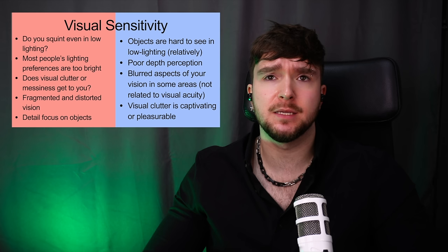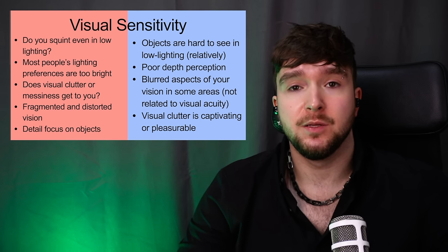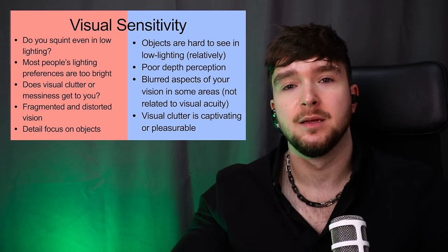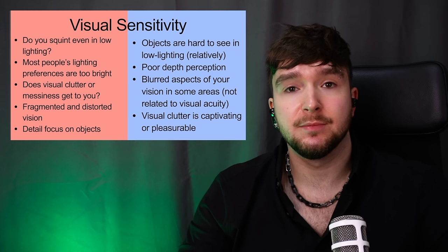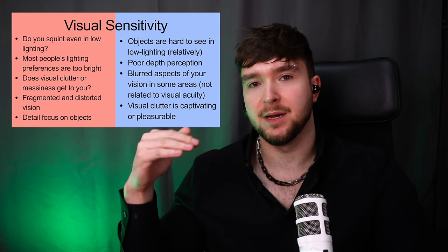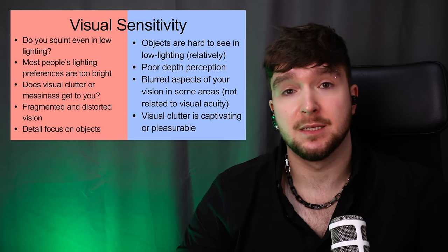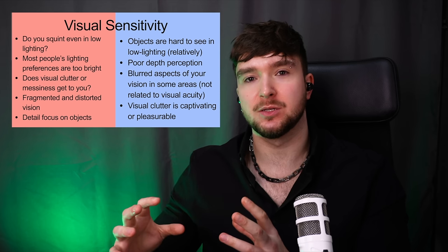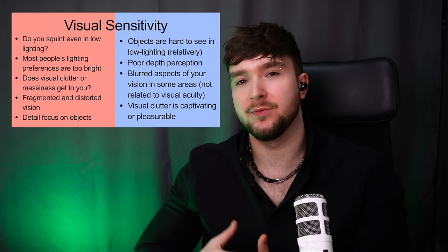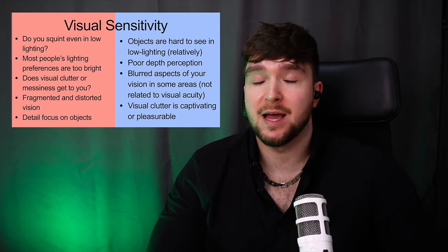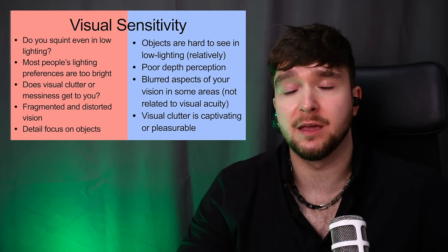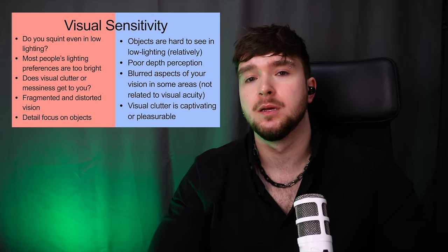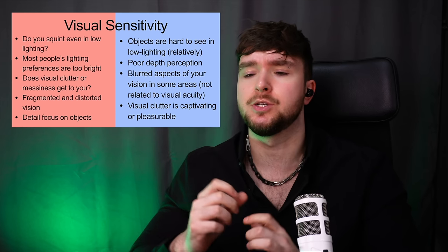Let's go for the first one: visual sensitivity. On the hypersensitive side — do you find that you squint even in low lighting? On overcast days your eyes and the muscles around your eyes feel very sore. Most people's lighting preferences inside might be too bright for you. Does visual clutter and messiness get to you? You could have fragmented or distorted vision when looking at bright things, and you might have a lot of detail focus on objects — things might look a little bit more crisp.